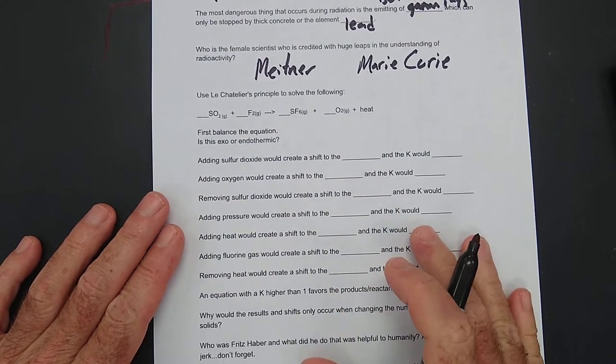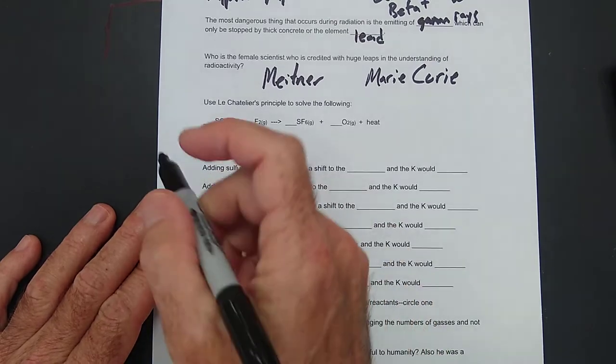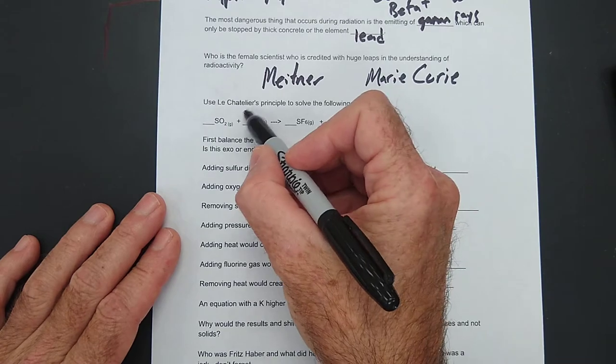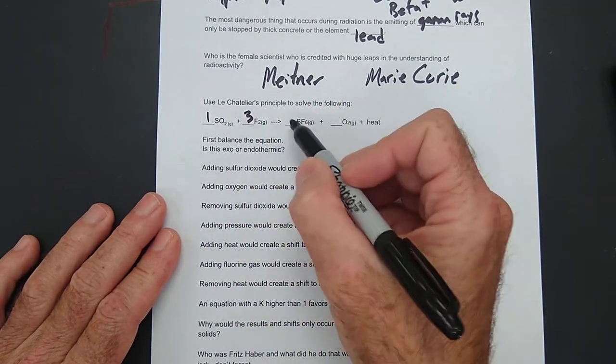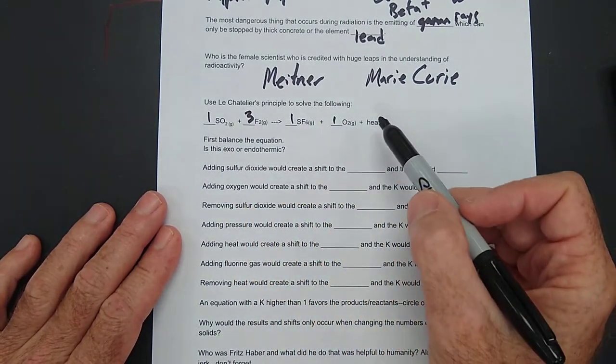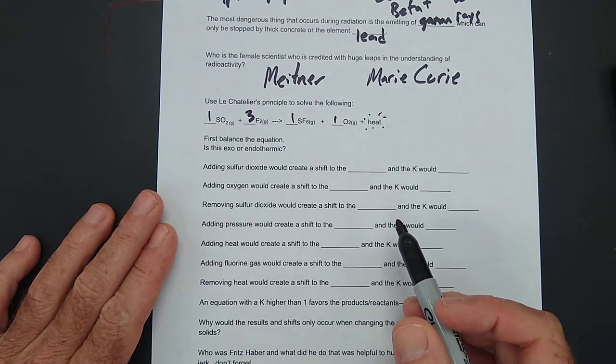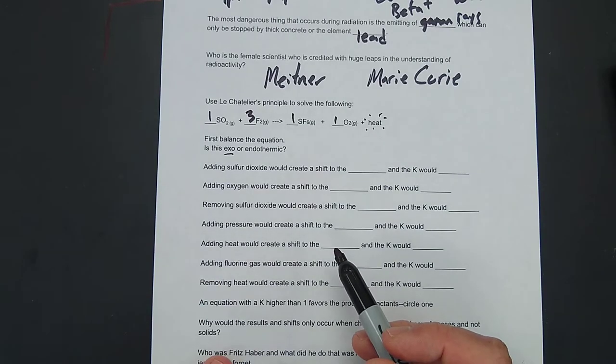The last problems here, this last set, this next set excuse me, is on Le Chatelier's principle. First, we've got to balance this bad boy. So I believe it's going to give us 1, 3, 1, 1. And in this equation, I'm showing it to be exothermic. All right. Is it exothermic or endothermic? Exothermic. All right.